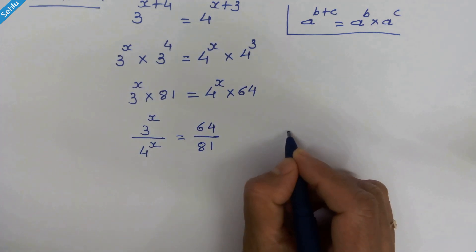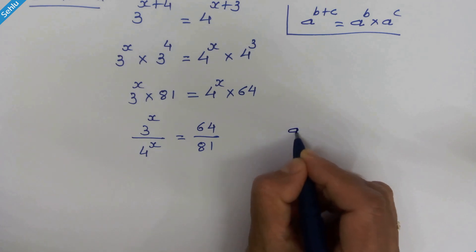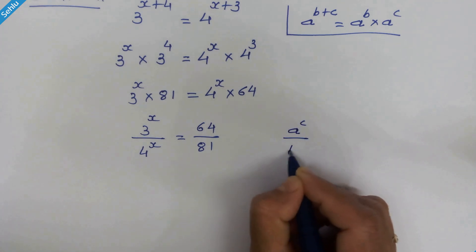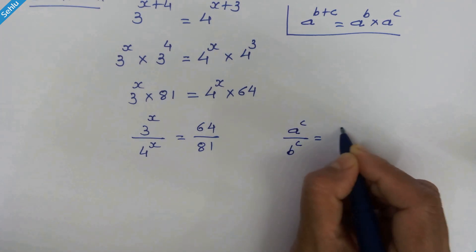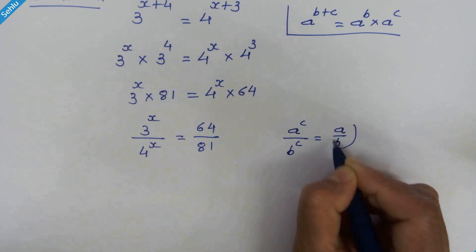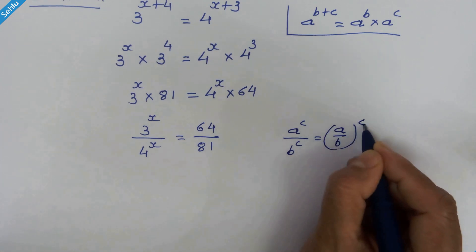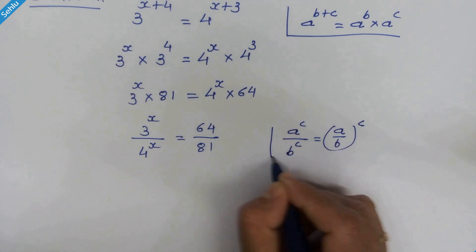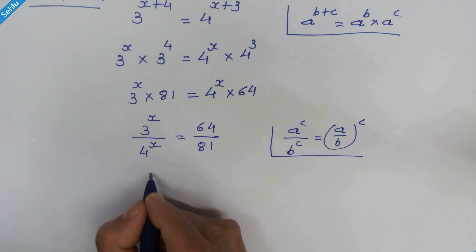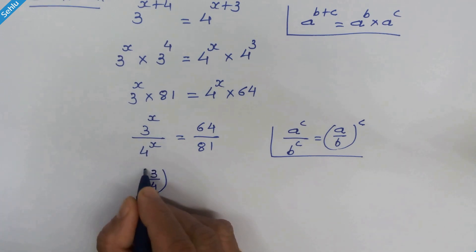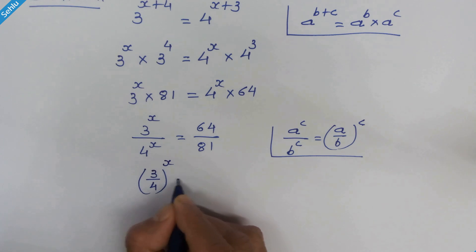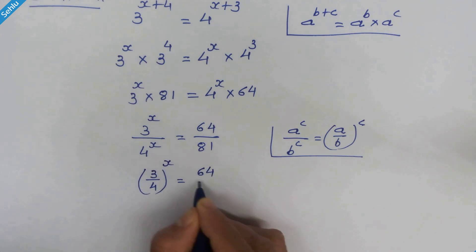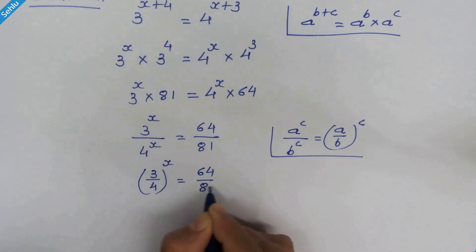Now if we have a raised to c upon b raised to c, then it will be a upon b whole raised to c. According to this rule, this part can be written as 3 upon 4 whole raised to x is equal to 64 upon 81.